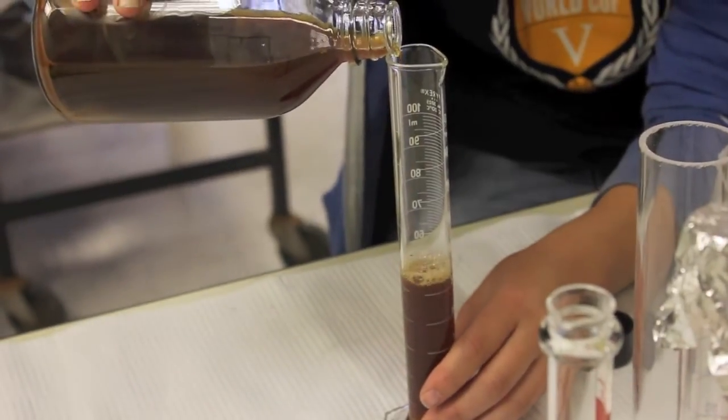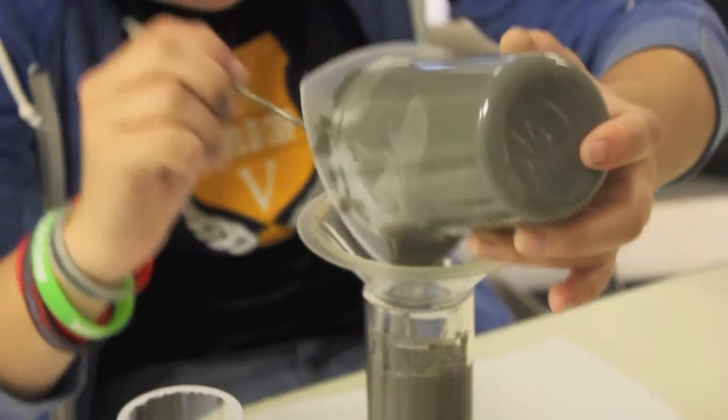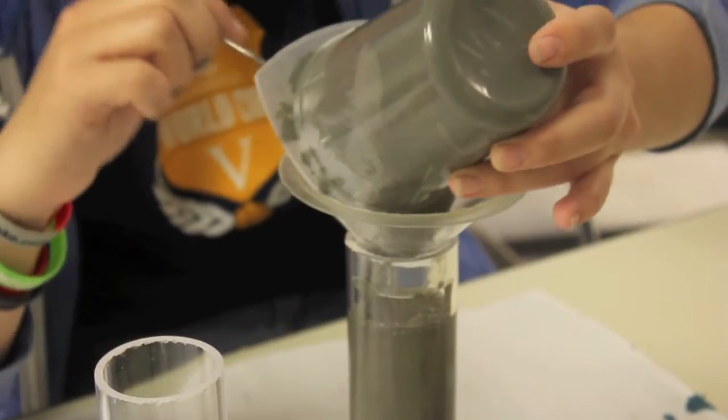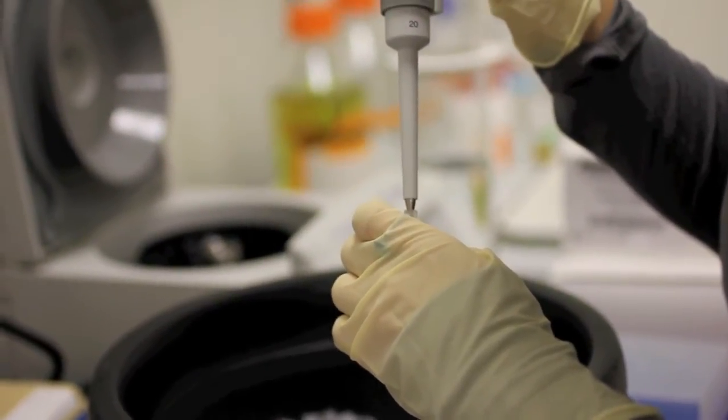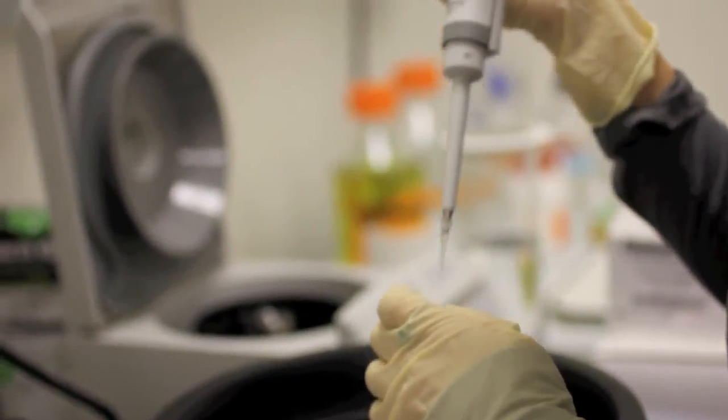Model systems are experimental systems that we can use in the lab that are a little bit simpler than a more complex system. For example, fruit flies are used as a model system to study genetics.